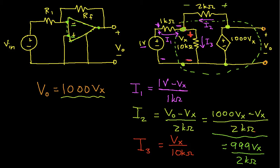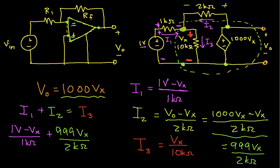Now I can go back to this node and say that the sum of currents entering is equal to the sum of currents leaving. So if I do that, I have I1 plus I2 is equal to I3. And now I can plug in the values that I computed for these guys. I1 is 1 volt minus Vx over 1k ohm plus I2, which is 999 times Vx over 2k ohms is equal to I3, which is Vx over 10k ohms.